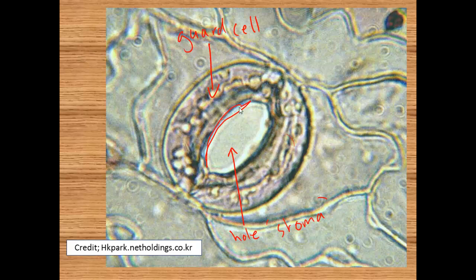The guard cell has slightly thicker cellulose on the inner side, which means that when it swells up with water, it expands — but the inner side stretches less than the outer side. This causes the cell to bend outward, a bit like putting sellotape on one side of a long balloon and blowing it up — the balloon bends around, and that is what opens up the stoma.